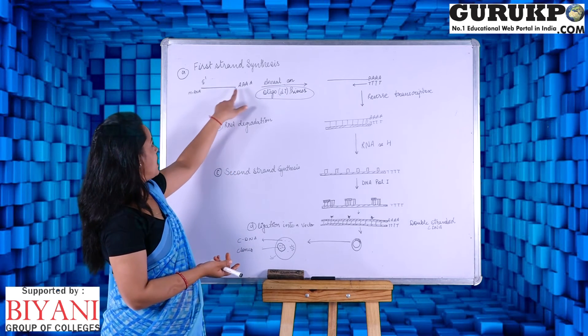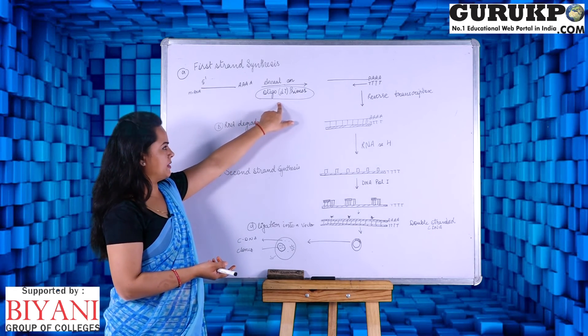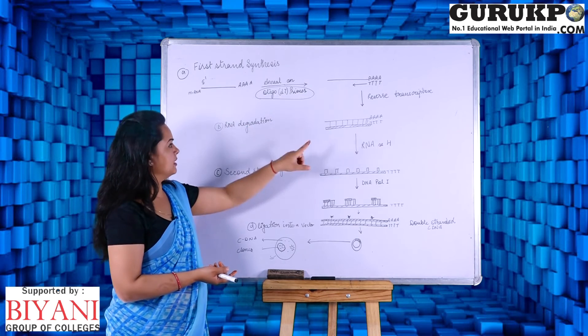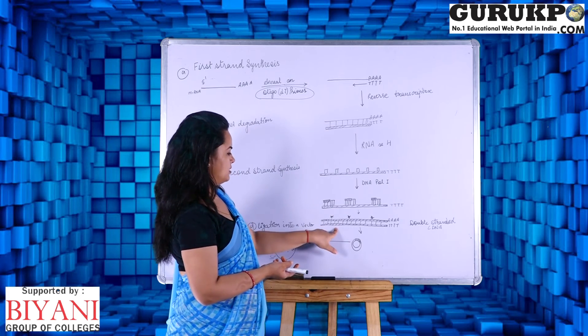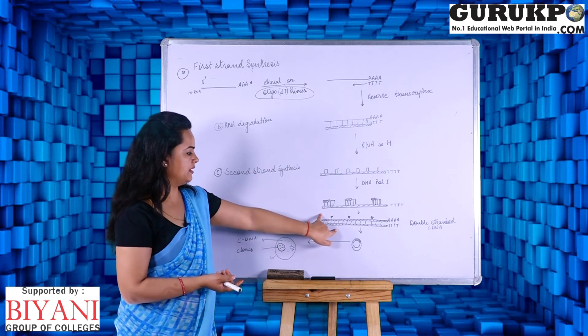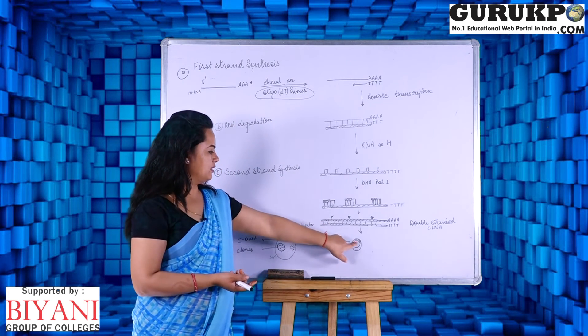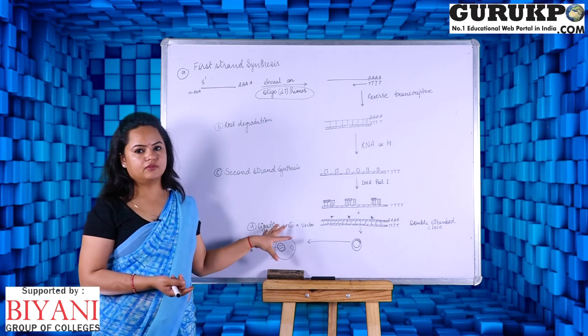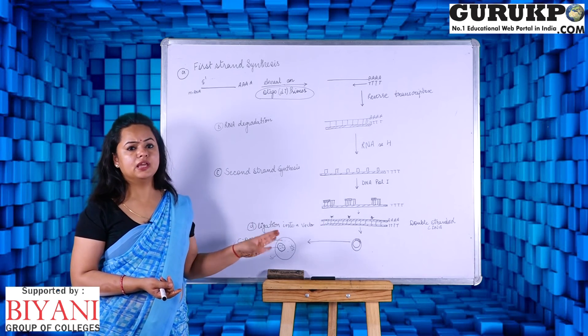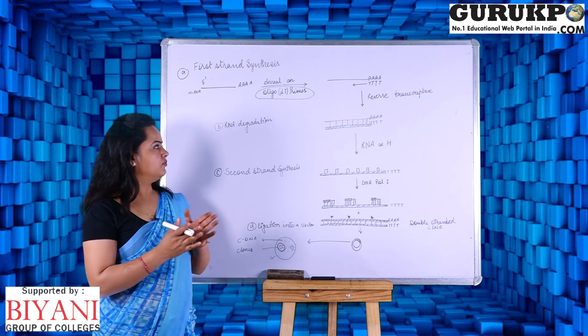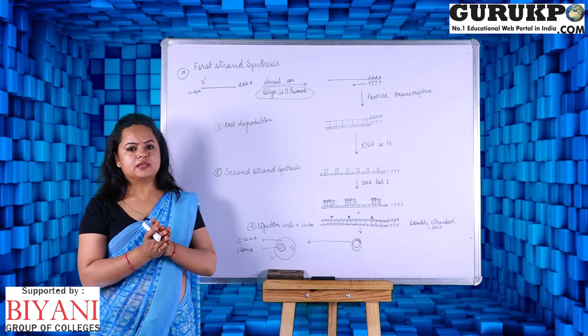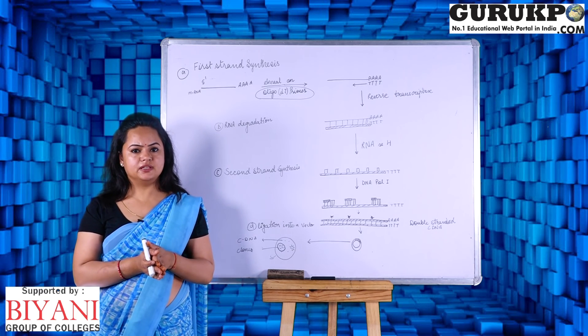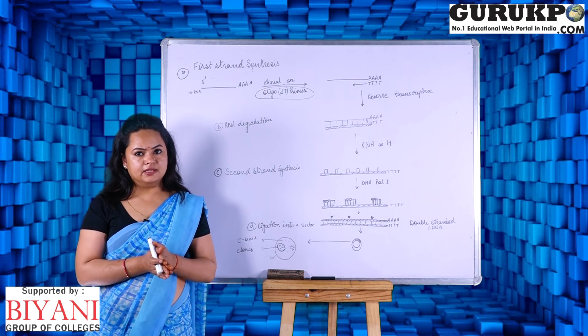But the gist is, if we have a poly oligo-dT primer, we can easily construct, we can transform this single-stranded messenger RNA to the double-stranded that is complementary DNA. And it could be ligated to a vector and this will be converted into a cDNA library. By again and again, if we transcribe all the messenger RNAs, we can assemble them together and we can form a cDNA library very easily.